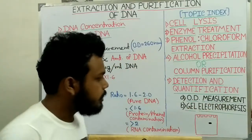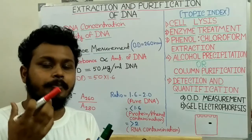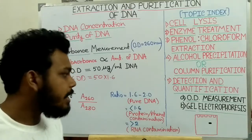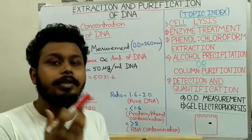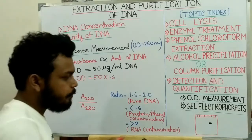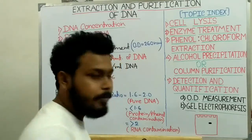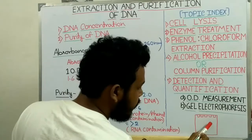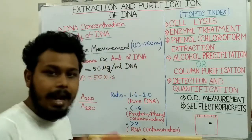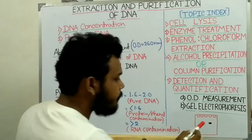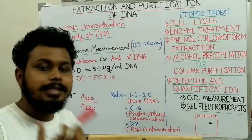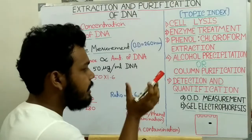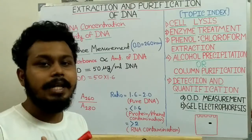Gel electrophoresis is used to measure the presence of DNA in the purified DNA sample and to assess the quality of the purified DNA. When we add the purified DNA into an agarose gel for agarose gel electrophoresis, we get a DNA band, and by measuring the intensity of this DNA band we can assess the quality of the purified DNA. In this way, we can detect and quantify the purified DNA.